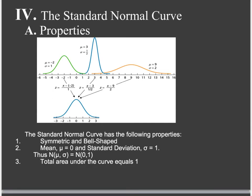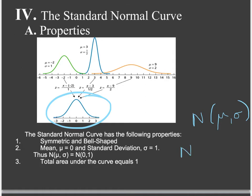Now some properties of the standard normal curve: again, it's symmetric and bell-shaped. But the standard normal curve, as opposed to just any normal curve, has a mean of 0 and a standard deviation of 1. The notation for any normal curve is N(mu, sigma). So a standard normal is written as N(0, 1) — mean is 0, standard deviation is 1. And just like any other normal curve, the total area under that curve is equal to 1.